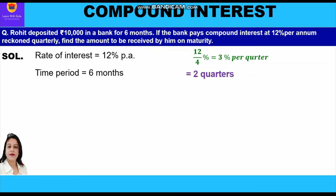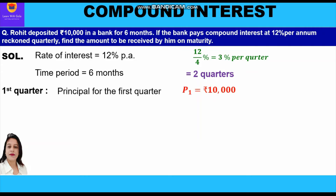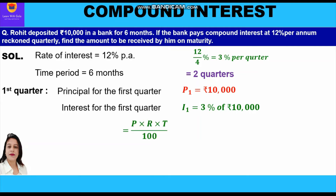Let us start with the first quarter. The principal for the first quarter is rupees 10,000 — the amount Rohit deposited in the bank. Interest for the first quarter is calculated at 3% on this principal using simple interest: P × R × T / 100 = 10,000 × 3 × 1 / 100, which equals rupees 300.